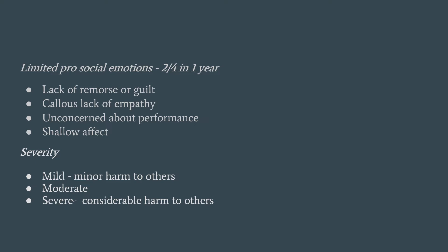Severity can be specified as mild, moderate, or severe. Mild is when they cause minor harm to others — that is, stealing items of non-trivial value or running away — this is a violation of rules, not causing harm to others. Whereas severe is where there is considerable harm being caused to others.